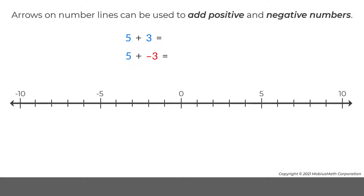For both calculations, an arrow is drawn to represent 5. This arrow starts at 0, points in the positive direction, and has a length of 5.